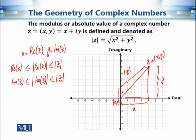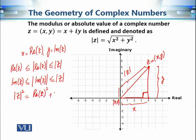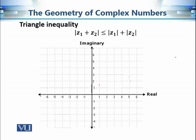We also know from Pythagoras' theorem that for a right-angle triangle — and we can observe that this is a right-angle triangle since one angle is 90 degrees — the square of the hypotenuse equals the sum of the squares of the base and perpendicular. So in this case, |z|² = x² + y², or in other words, |Re(z)|² + |Im(z)|².